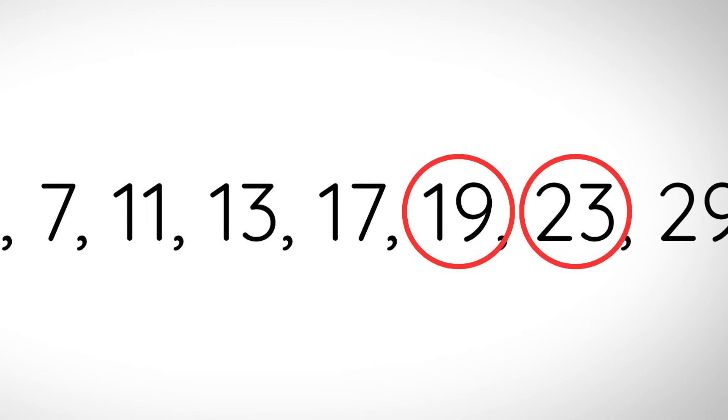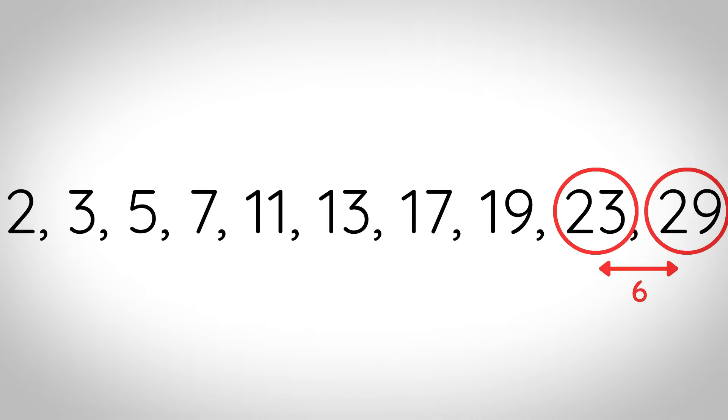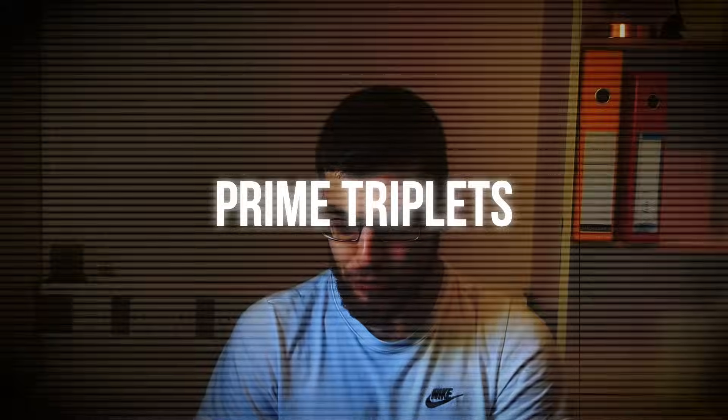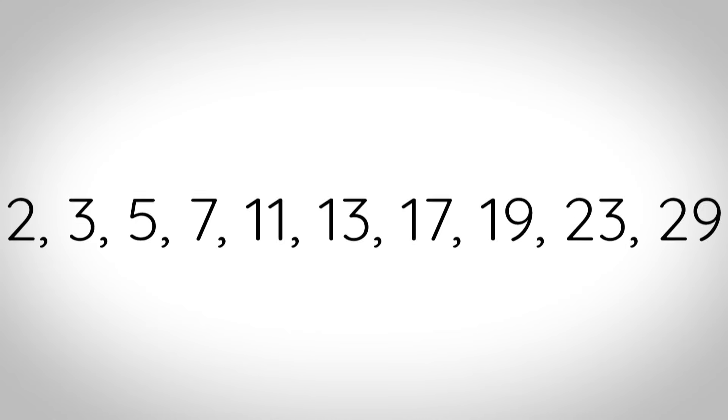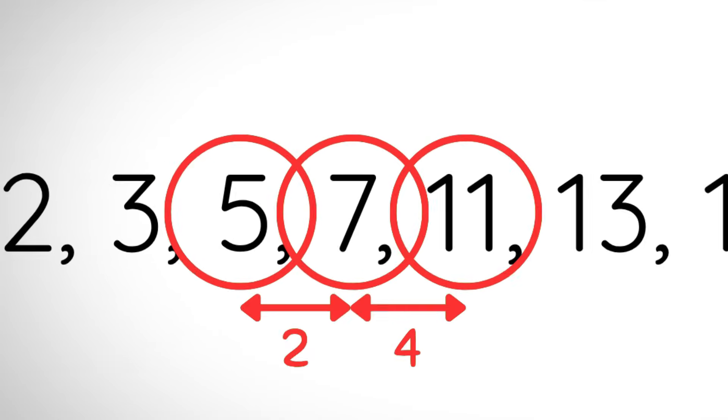Cousin primes: a prime number p where p plus or minus 4 is prime. Sexy primes: a prime number p where p plus or minus 6 is prime. Prime triplets: two twin primes where another prime is separated by 4 from one of the twin primes. For example, 5, 7 and 11 — 5 and 7 are separated by 2, so they are twin primes, and 7 and 11 are separated by 4.